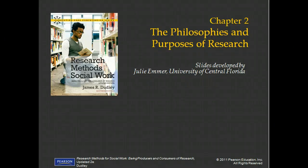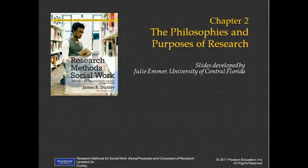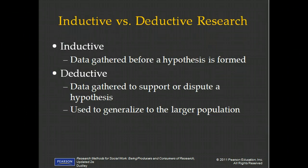Welcome back to Social Work 375. This is Chapter 2, and in Chapter 2 we're talking about the two major philosophies and purposes for research. When we say philosophies, we're really talking about perspectives about what the researcher or the research community believes. You may have learned about these ideas in other classes: inductive versus deductive. You may have also heard them referred to in more methodological ways — quantitative methods versus qualitative methods. Inductive and deductive, and quantitative and qualitative, are not exactly the same things; there are distinctions between them. But for the purposes of this class, you'll find that inductive research is aligned with qualitative research and deductive methods are aligned with quantitative research.